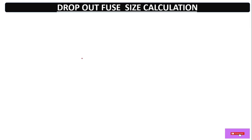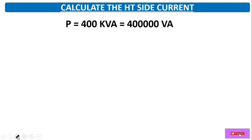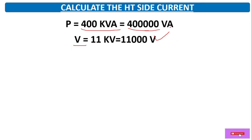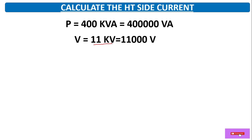Now let's calculate how much capacity DO fuse we require for a particular transformer. We are going to calculate the size of DO fuse for a 400 KVA transformer. Here P is equal to apparent power — 400 KVA. If we convert it to VA we multiply by 1000. The transformer is 11 KV by 440 volt, a distribution step-down transformer. The HV side, meaning primary side voltage, is 11 KV or 11,000 volts.